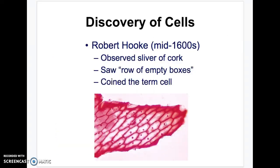The first scientist to discover the cell was Robert Hooke. He basically looked at cork under his microscope that he built himself, and he saw a row of these empty boxes. He thought they looked a lot like the cells that monks used to live in in monasteries, which were just basically perfect empty squares with a bed and very little else. So he coined them cells.